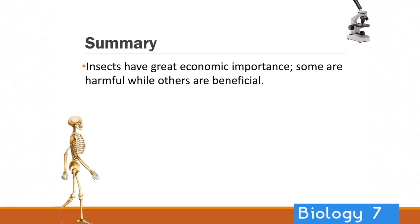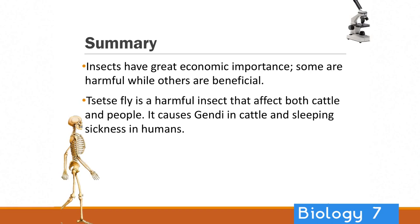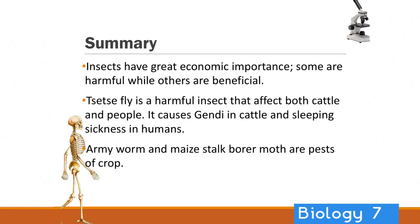In summary: insects have a really great economic importance — they're not all bad, some are really important, but some are harmful and we've got an ongoing battle to find a balance. The tsetse fly is a really harmful one that can affect both cattle and people and causes sleeping sickness. There's also the army worm and maize stalk borer, which are pests of crops.